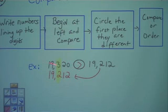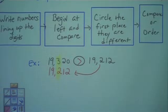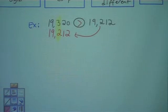Notice the bigger side of the sign is facing the bigger number. So you would read this 19,320 is greater than 19,212. Now let's try one where we're ordering numbers. We're going to put these numbers in order least to greatest. So here's our three numbers.